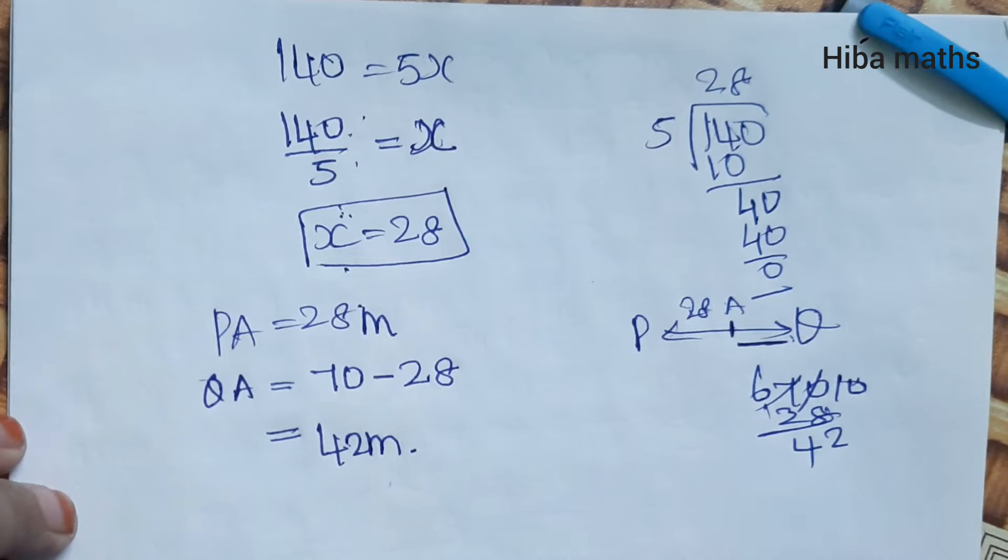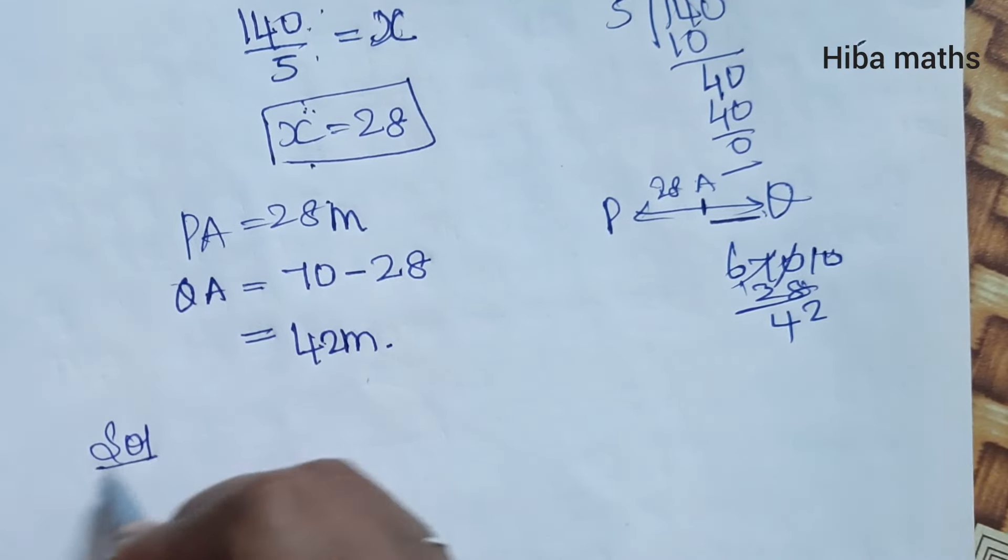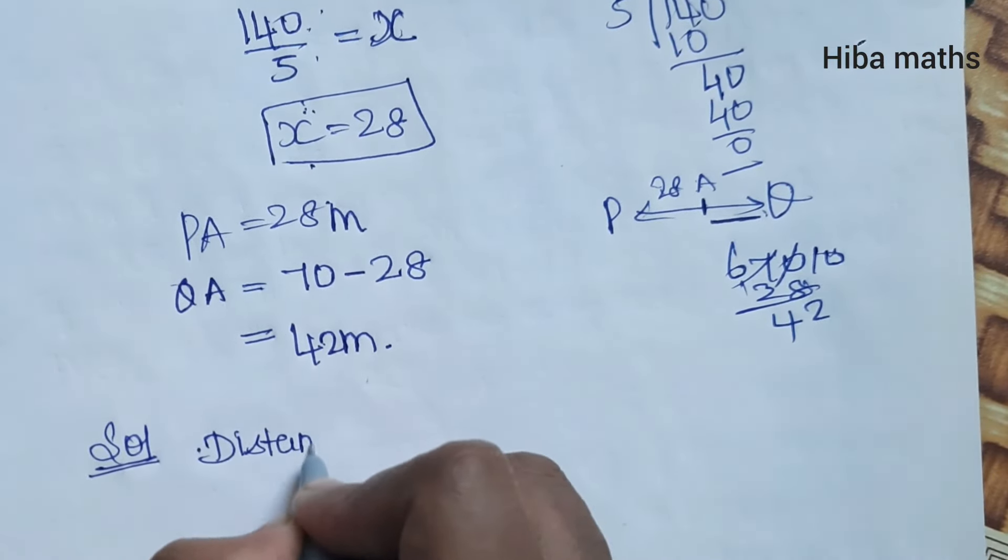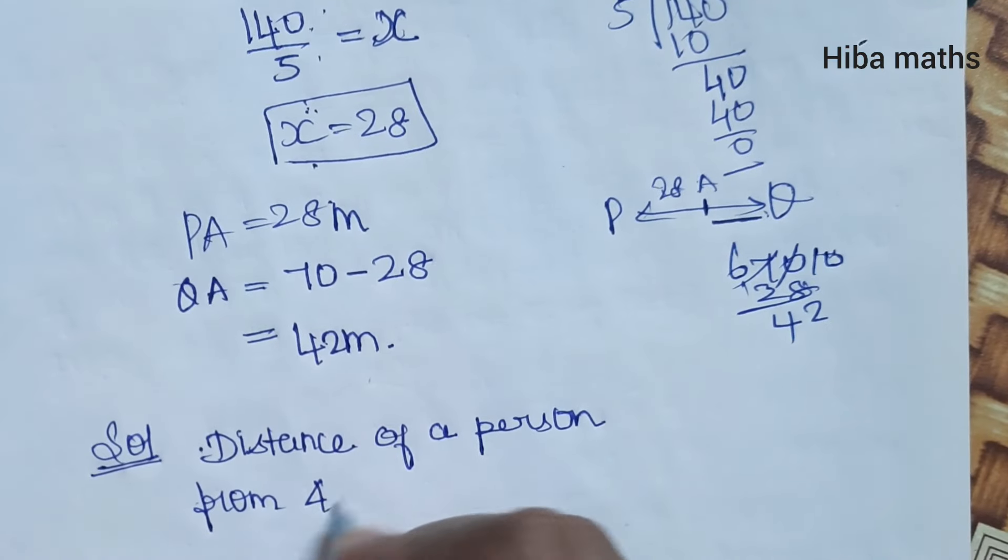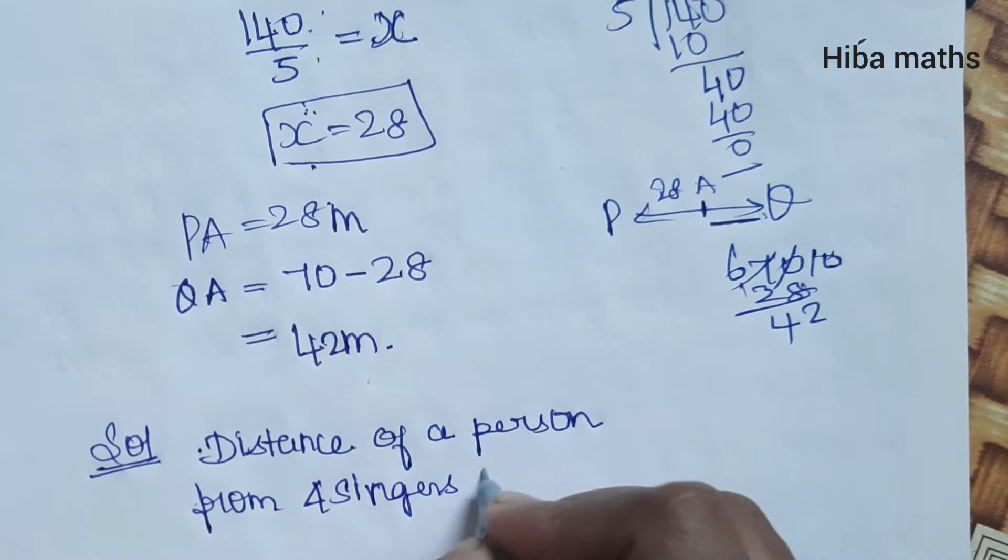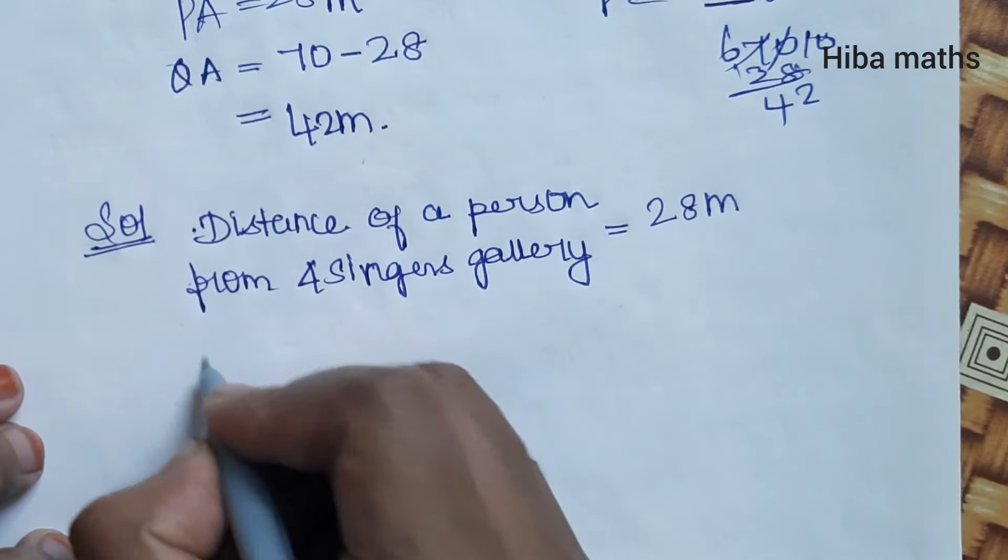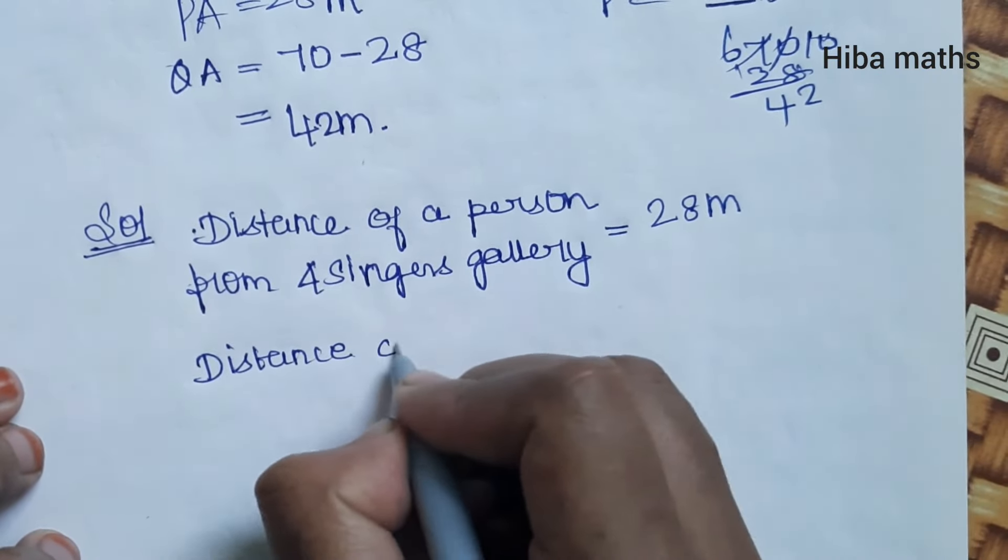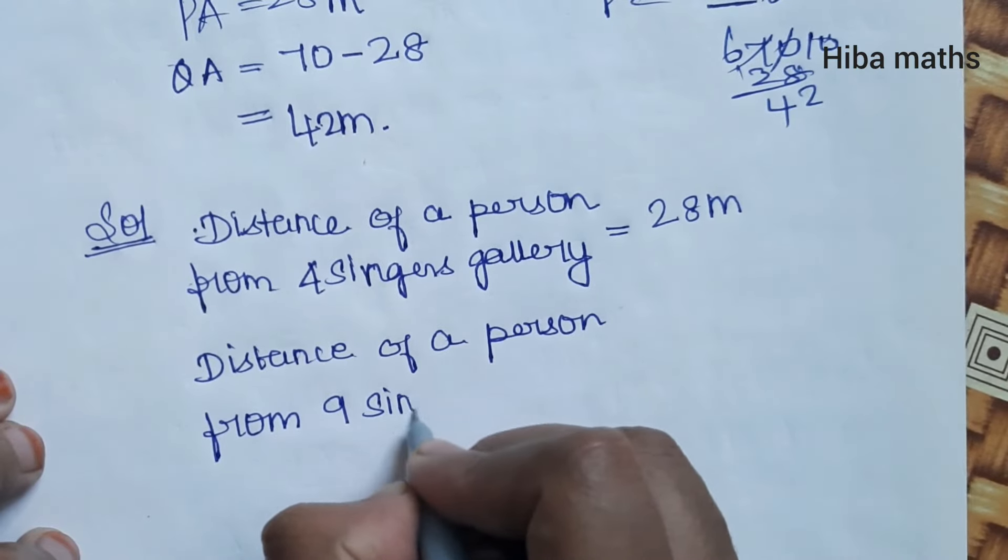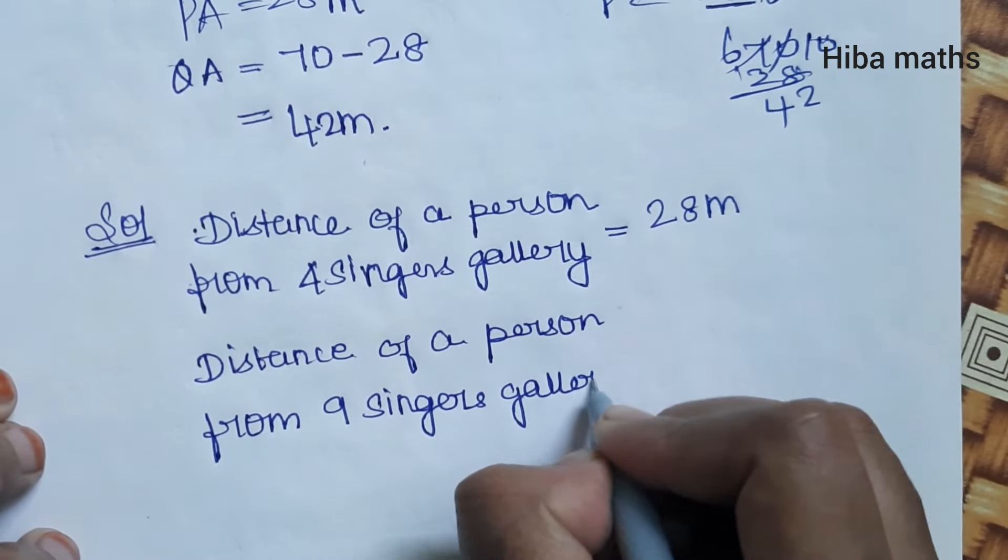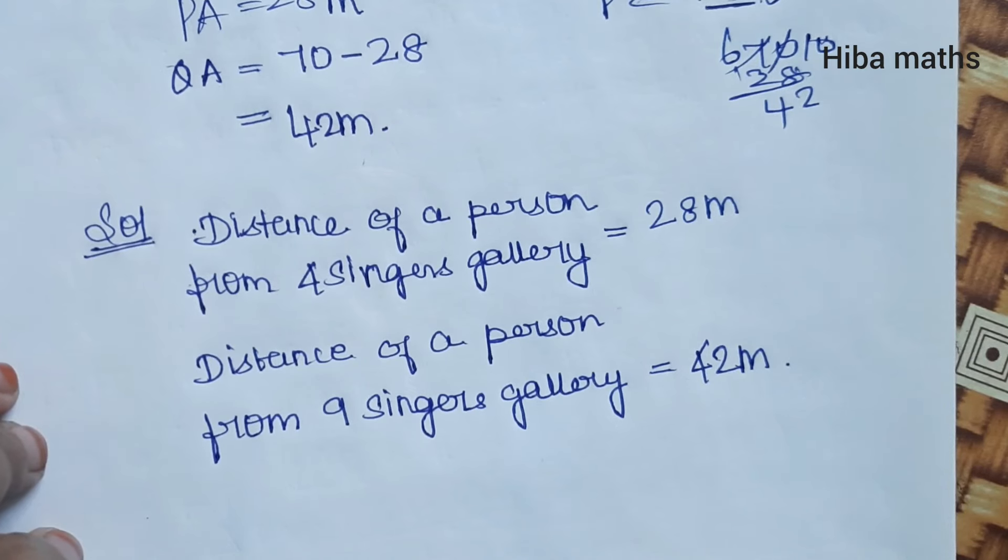So the final answer: the distance of the person from the 4-singer gallery is 28 meters, and the distance from the 9-singer gallery is 42 meters. If you have any doubts, comment below. Thank you so much for watching.